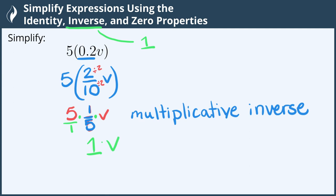1 times v is the multiplicative identity. 1 being the multiplicative identity, multiplying it by any other real number gives us that real number. And we're all done.